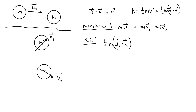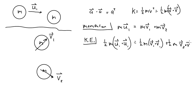For kinetic energy conservation: one-half m times (u1 dot u1) — instead of writing u1 squared we write u1 dot u1 — equals one-half m times (v1 dot v1) plus one-half m times (v2 dot v2).